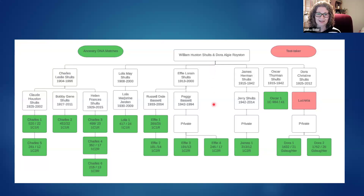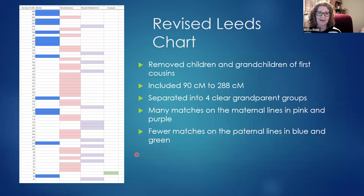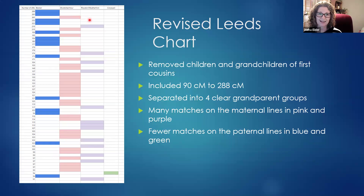When I removed all those extras from the Leeds chart, I actually did come up with four grandparent lines. The same blue line was the paternal matches, but the maternal matches separated out nicely too — here are the Schultz-Eisenhower line and here are the Royston-Weatherfords. They separated out much better than the previous chart.